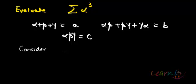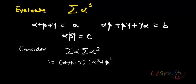now we have α³, so let us try to consider the product of the two sums which is Σα² and Σα. So, sum of α into sum of α² which essentially equals to (α + β + γ) into (α² + β² + γ²), okay?